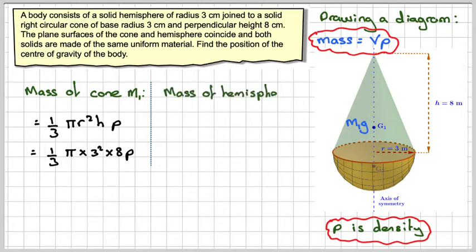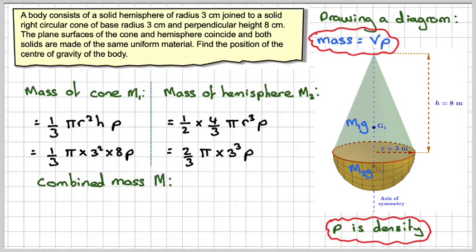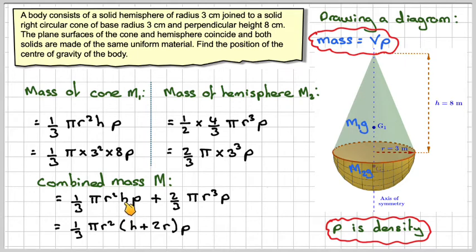Now for the hemisphere, well for a sphere it's four thirds pi r cubed, so we want half of that. So it'll be a half times four thirds pi r cubed times rho, and that will be two thirds pi times three cubed times rho. Now if we combine these two formulas together, there's a common factor of one third pi r squared which will leave a two r in the brackets plus an h, multiplying by rho.